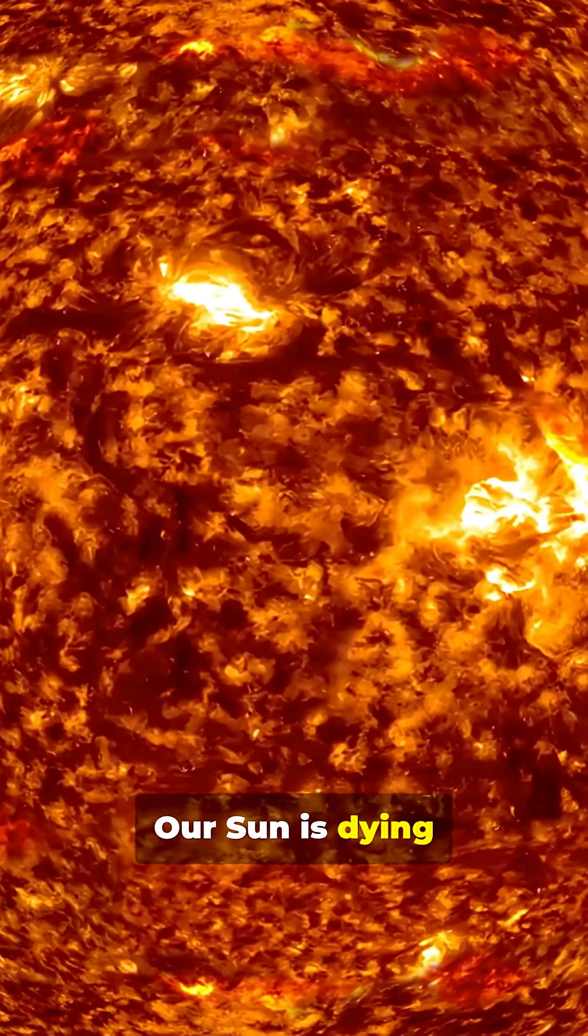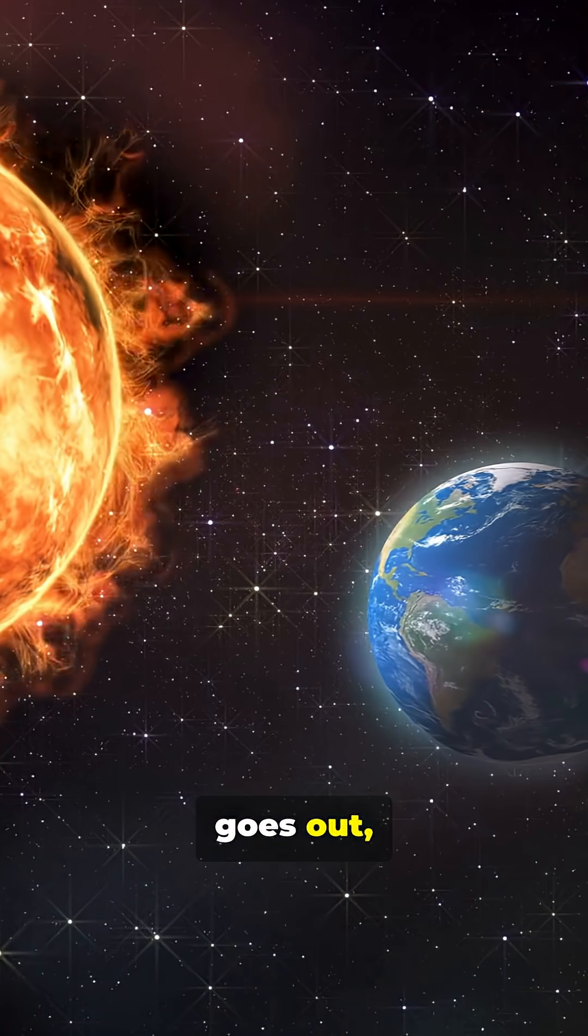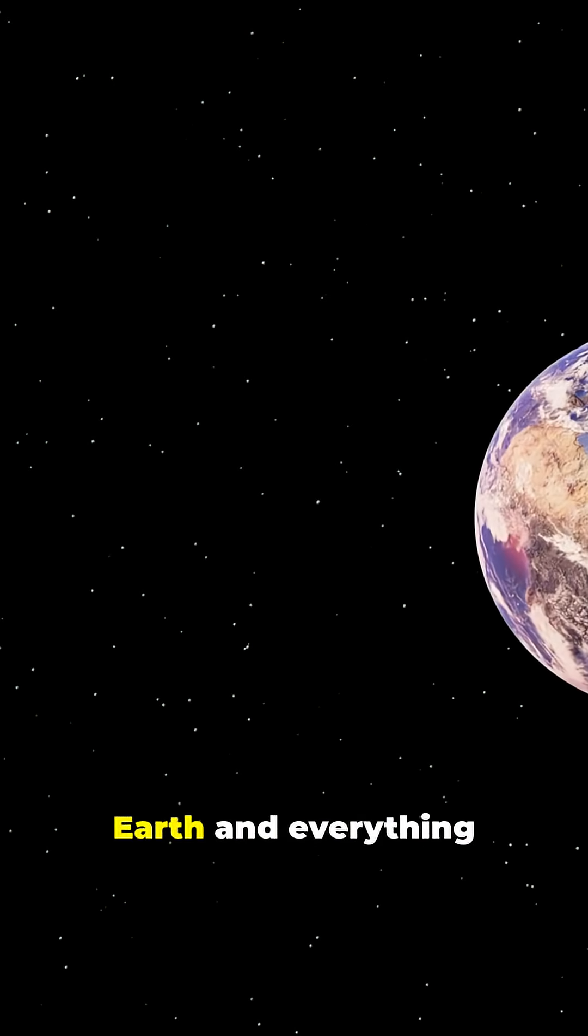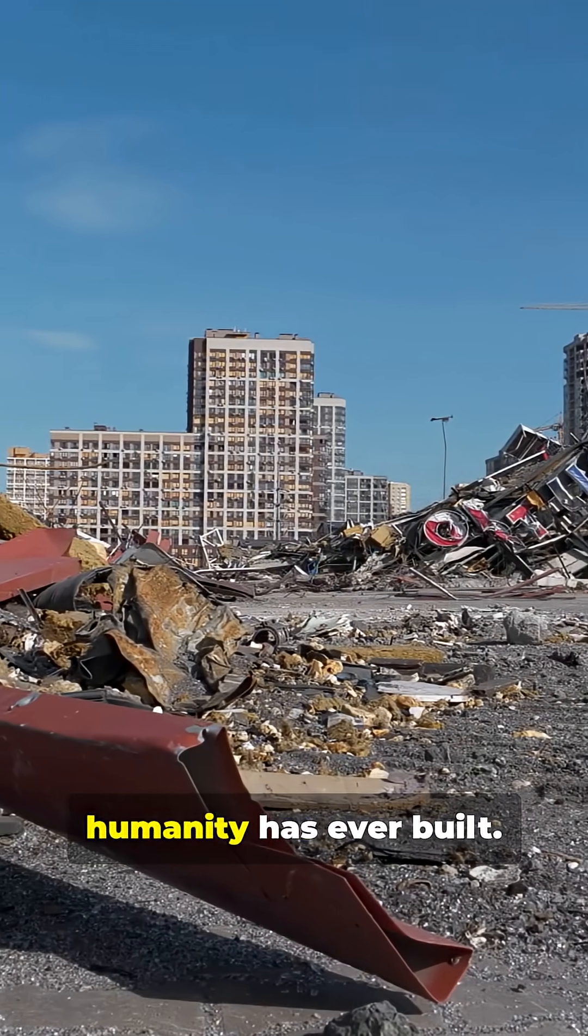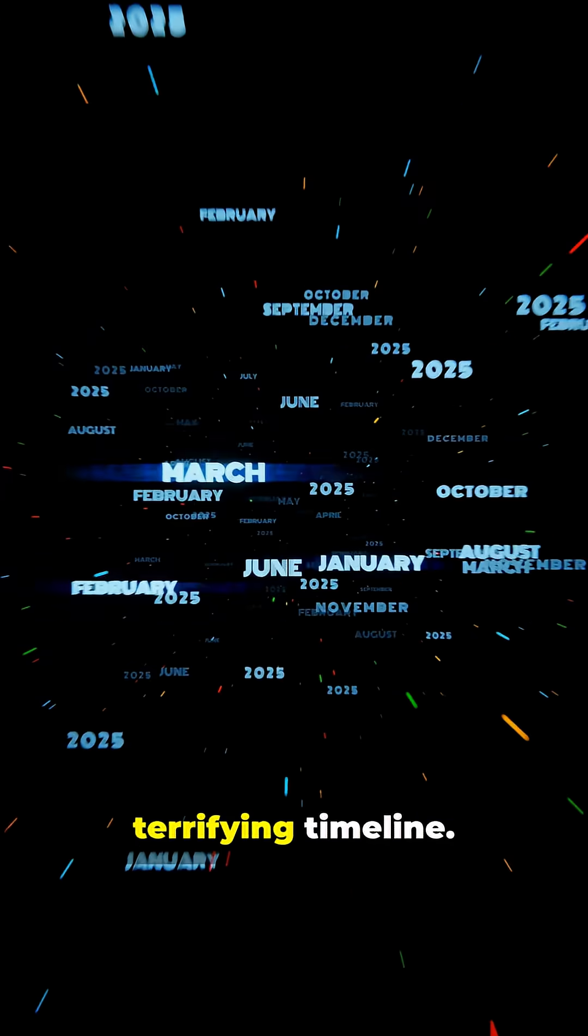Our Sun is dying and when it finally goes out, it will obliterate Earth and everything humanity has ever built. Here's the terrifying timeline.